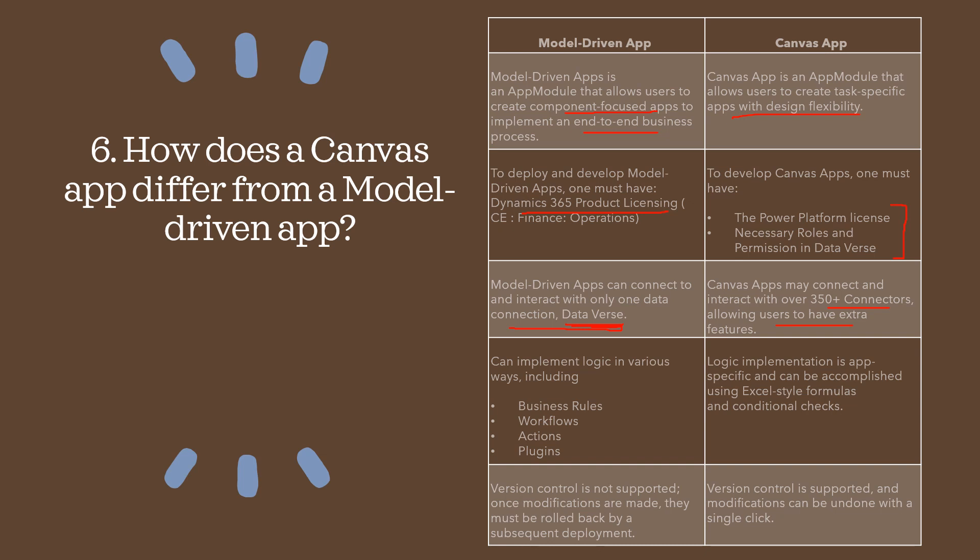In model-driven apps, logic can be implemented in various ways including business rules, workflows, actions, and plugins. In Canvas Apps, logical implementation is app-specific and can be accomplished using Excel-style formulas and conditional checks. Additionally, version control is not supported in model-driven apps — modifications must be rolled back by subsequent deployment. Whereas in Canvas Apps, version control is supported and modifications can be undone with a single click.